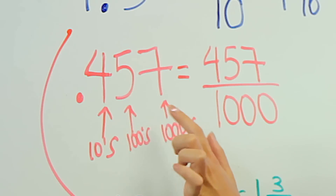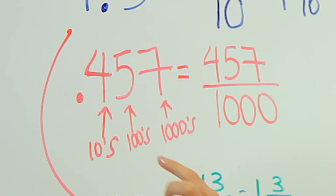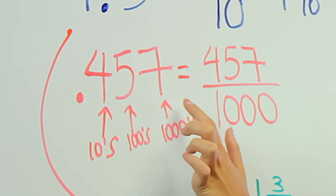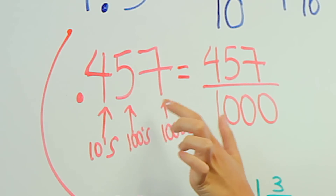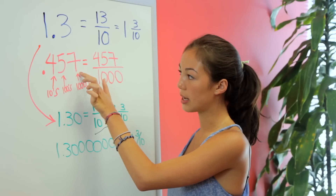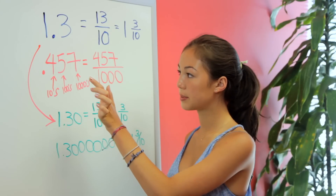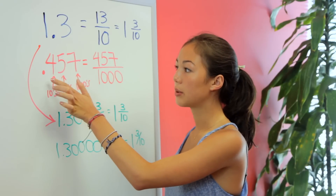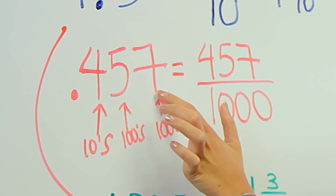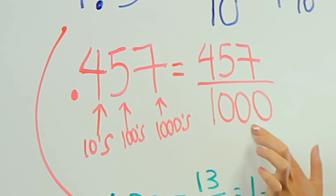So here we have a longer decimal. We have the tens, the hundreds, the thousandths place. So we end here at the thousandths place. So we have 457 over a thousand.